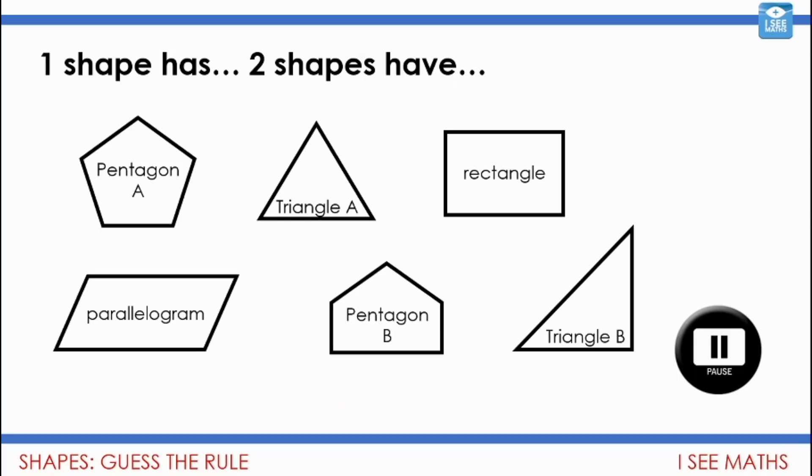So let me explain the ones that I got. Of course, you might have found different examples. So I went for one shape has no lines of symmetry, just the parallelogram. All the other shapes have got lines of symmetry. Two shapes have all sides the same length. So the pentagon, all its sides are the same length and its angles are the same. It's regular. So is triangle A, all its sides are the same length. For three shapes have, I went for three shapes have acute angles, at least one acute angle. Triangle B, triangle A and the parallelogram. For four shapes have, I went for one right angle or less. So triangle B, triangle A, pentagon A and the parallelogram. I couldn't think of one for five shapes have, so I'd love to know if you've got any suggestions for that one. And for six shapes have, I went for six shapes have straight sides.